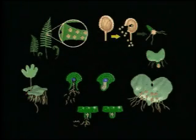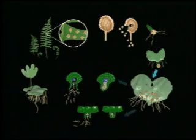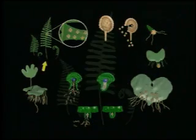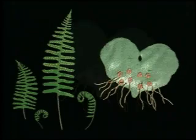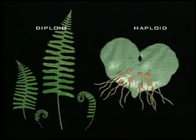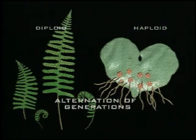Plant sexual life cycle is more complex than animals. Plants have two distinct multicellular adult forms, one diploid and one haploid, that give rise to each other. Diploid and haploid adults alternate in a life cycle. Thus, it is called alternation of generations.